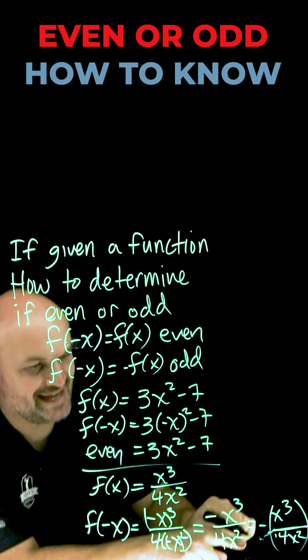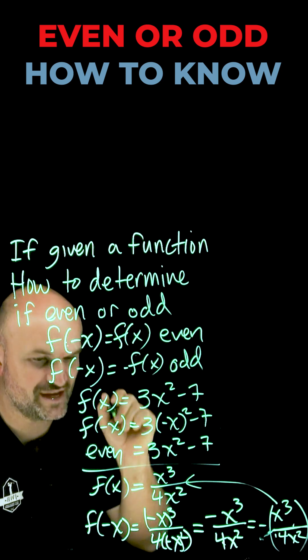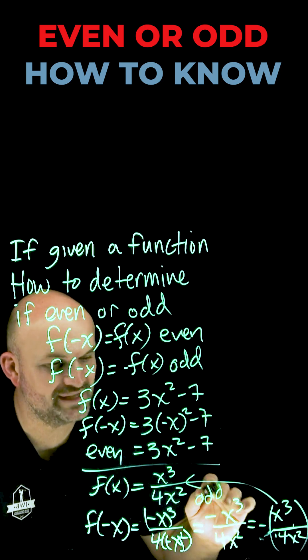which you can see is going to be a negative times my original function, which is f(x). So therefore in this example, we have something that is odd.